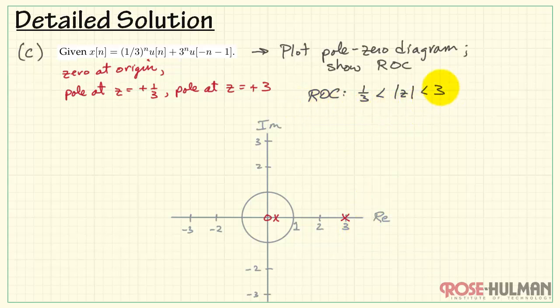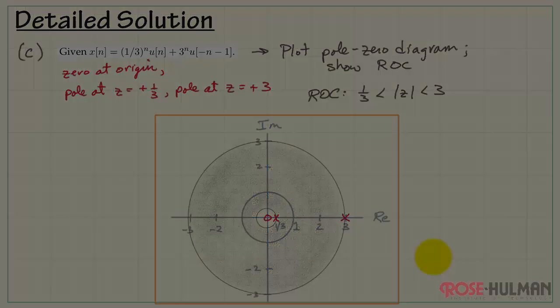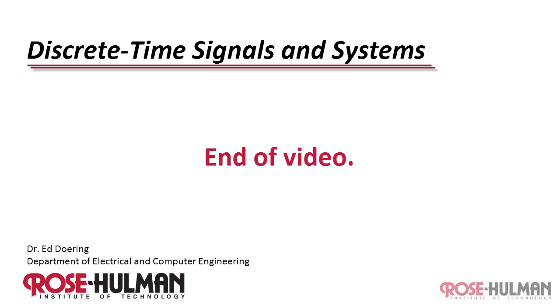Finally, let's get the region of convergence on the plot. We have three and one-third. We have two circles whose radii are dictated by the pole locations, and that becomes the region of convergence. It's an annulus shape in this case. And that wraps up this example.